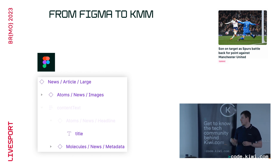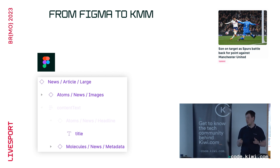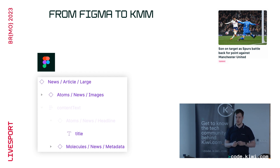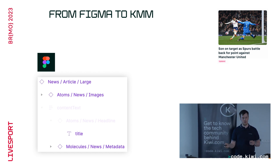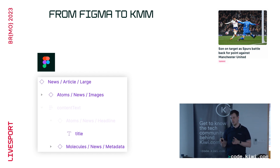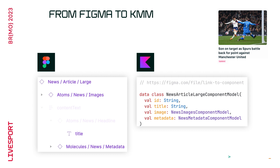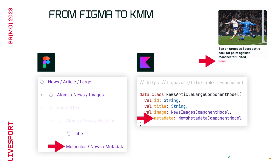Let's focus on a single article component called 'News Article Large' — one large article. For our designs we use Figma, and our designers implemented an atomic design system, providing us with atomic components inside Figma. We as developers write code that exactly represents those Figma components. On the right side is a data class with the same name as the component in Figma — it has an image, a title, and some metadata. This component model is part of the KMM framework and is shared between both platforms.